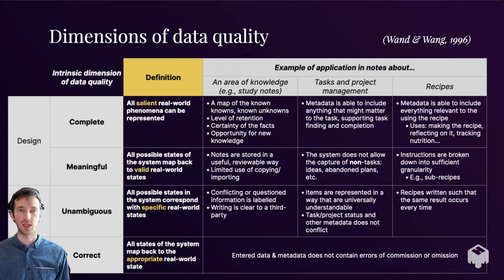To walk through these four categories briefly: completeness is whether you can represent all salient real-world information phenomena in the information system. Meaningfulness is whether all possible states of the information system map back to valid real-world states. Unambiguity means all possible states in the system correspond with specific real-world states. Finally, correctness is whether the things you've stored in your information system map back to the right, the correct, the appropriate real-world state.